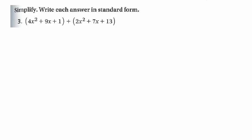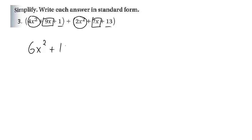When you are adding and subtracting, you just combine like terms. I like to either highlight, circle, or do something to draw my attention to the like terms. So I am going to circle all the x squareds, box all the x to the first power terms, and underline all the constant terms. That is technically a degree of zero on the x. Then you add the coefficients — you do not add the exponents. So you get 6x squared, not 6x to the fourth, plus 16x plus 14.